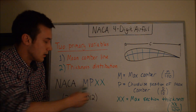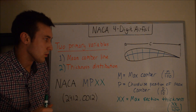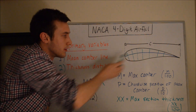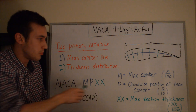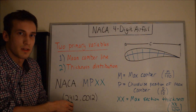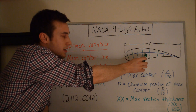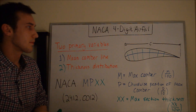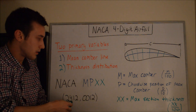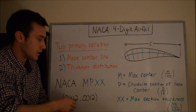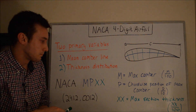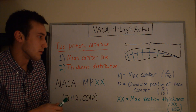Let's go through what each of these terms mean. M is the maximum camber as a percentage of the chord — for the 2412 that means 2%. P is the chord-wise position of the maximum camber, given as P over 10, so the '4' means 40%, meaning the maximum camber occurs four-tenths of the way back from the leading edge. XX is a single two-digit number — the '12' means 12% maximum section thickness as a percentage of the chord length.